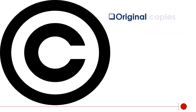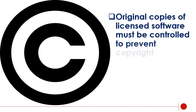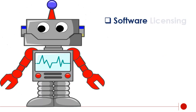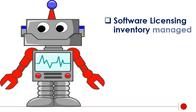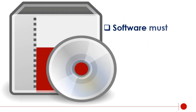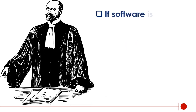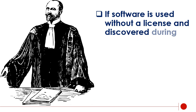Original copies of licensed software must be controlled to prevent copyright violation. Software licensing inventory can be managed manually, like with spreadsheets, or automated. Software must be legally licensed before being installed. If software is used without a license and discovered during an audit, there can be legal consequences.